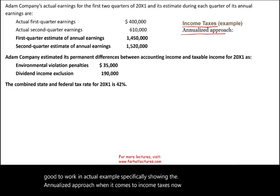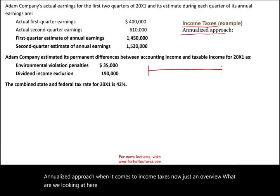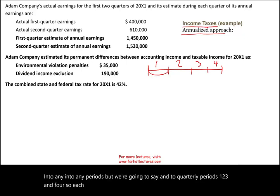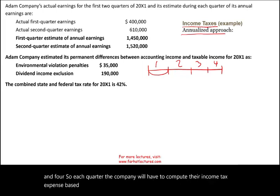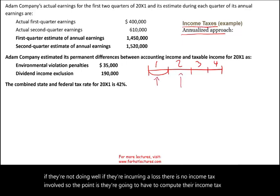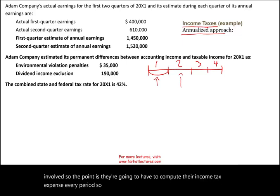Here's an overview of what we're looking at. Interim reporting basically breaks the year into periods — we're going to say into quarterly periods: one, two, three, and four. Each quarter, the company will have to compute their income tax expense based on how well the company is doing. If they're incurring a loss, there's no income tax involved. So the point is they're going to have to compute their income tax expense every period, and the question is: how do we know what our income tax expense is?